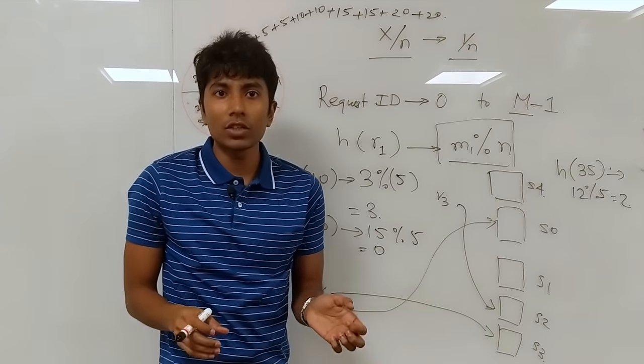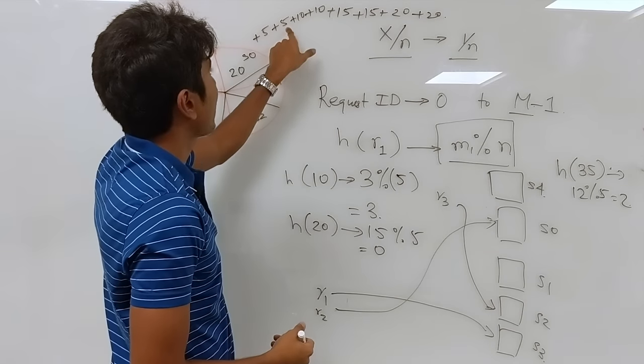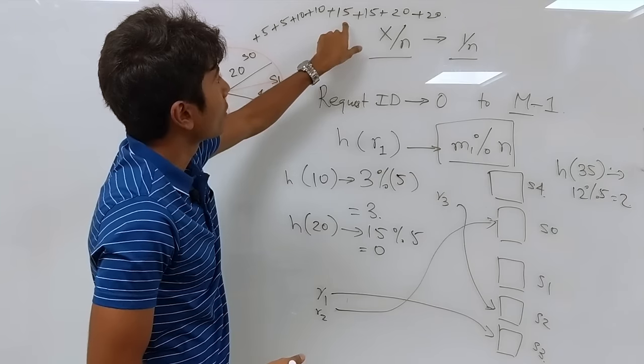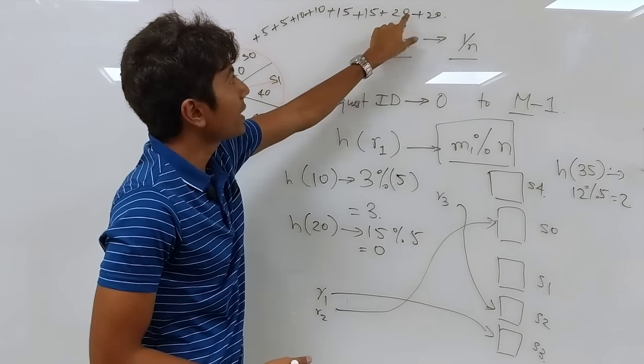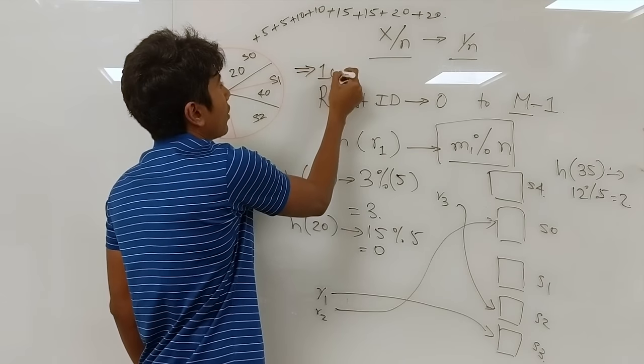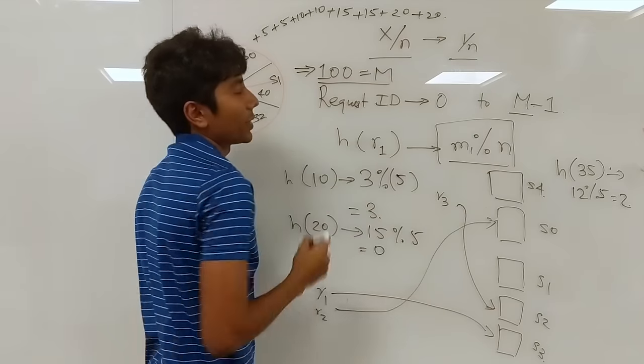And finally, S4 has to actually take 20 buckets. So the cost of the operations, if you see, the cost of the change in this is 5 plus 5, 10, 20, 30, 40, 50, 60, 70, 80, 90, 100. So in total, the change was 100, which is actually your entire search space.